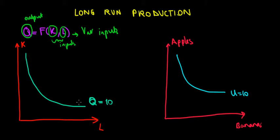This curve shows the combinations of capital and labor that give us 10 cars in production. This is the set of combinations of inputs that give the same output.